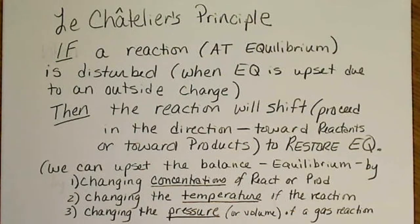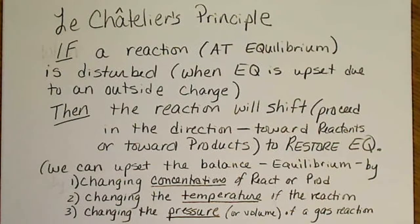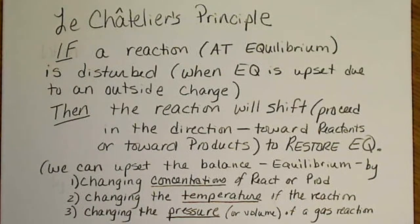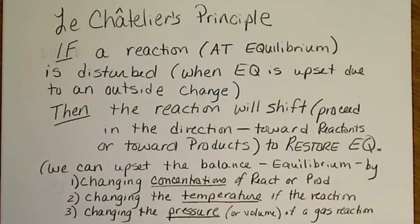We're going to look at Le Chatelier's Principle, which is a principle concerning equilibrium. Le Chatelier is the person who came up with it, and basically it states that a system will always achieve equilibrium. So if we do something to disturb equilibrium, then the chemical reaction is going to proceed in a direction — either right or left, toward products or toward reactants — to reestablish equilibrium.